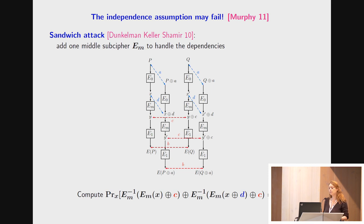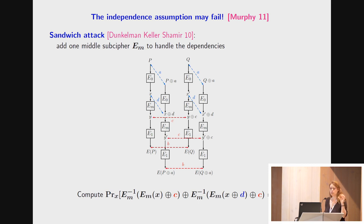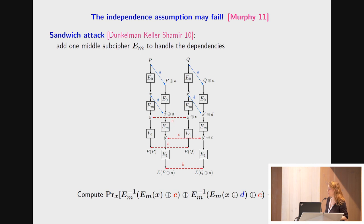For this reason, Dunkelmann, Keller, and Shamir proposed instead to divide the cipher not into two halves but into three parts, where the middle part EM is very small — typically one single round or a single S-box layer of the cipher. The idea is to concentrate these dependencies in this middle layer and to study carefully what happens there. The difference from before is that now we do not involve several rounds of the cipher but a much simpler transformation, typically one S-box layer.